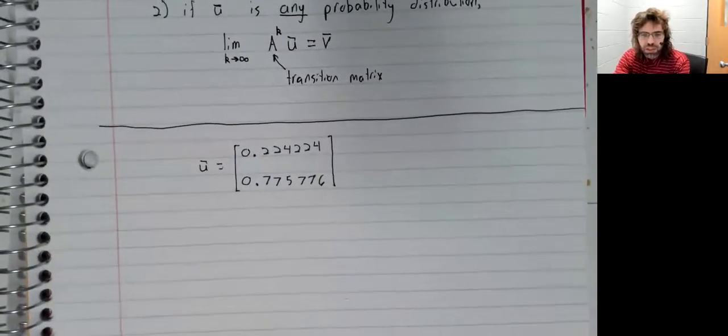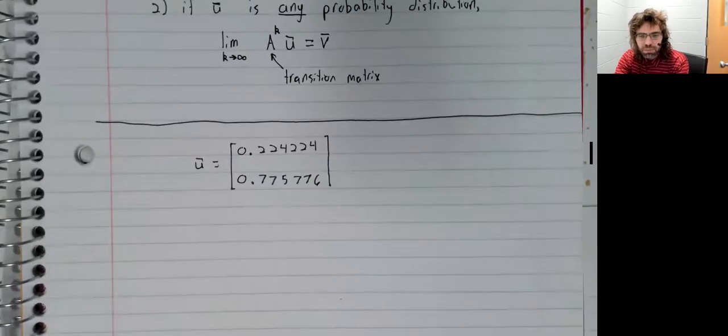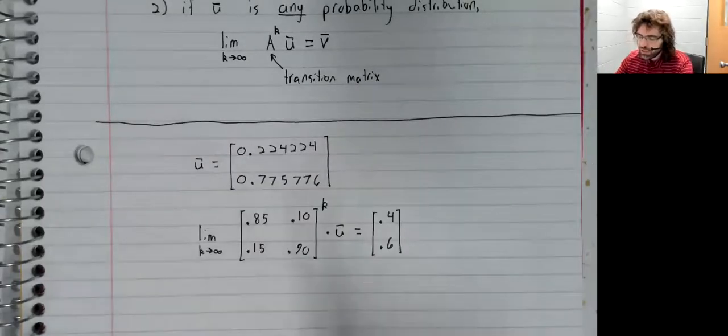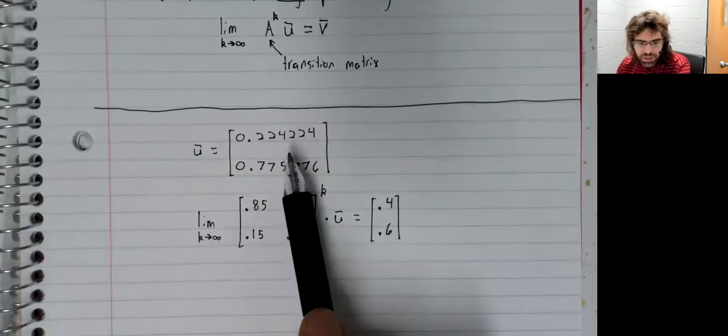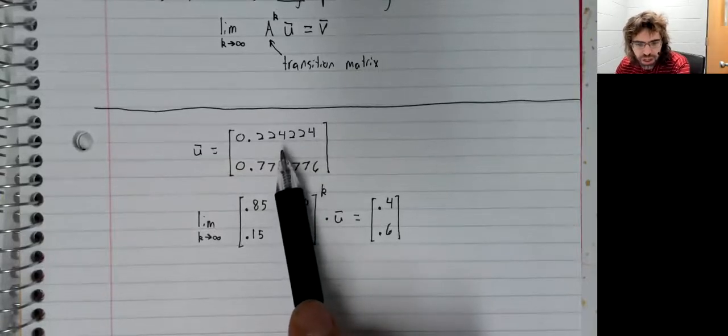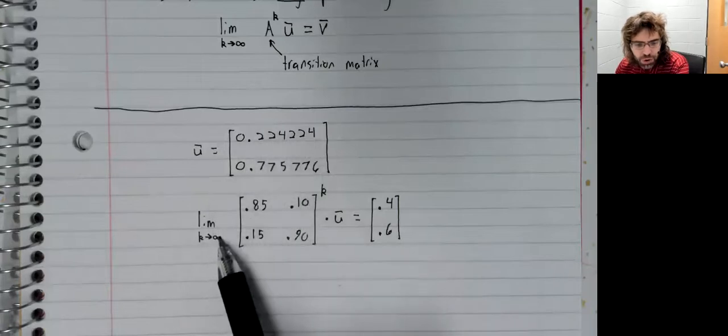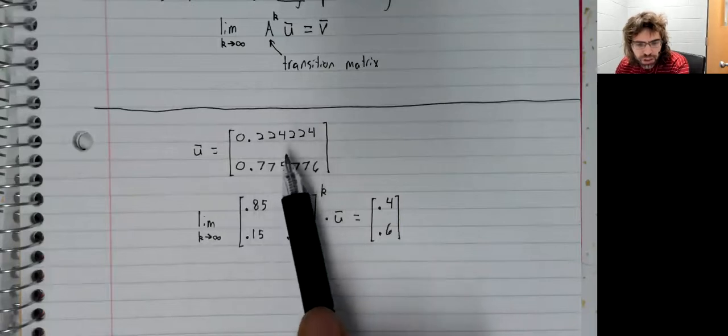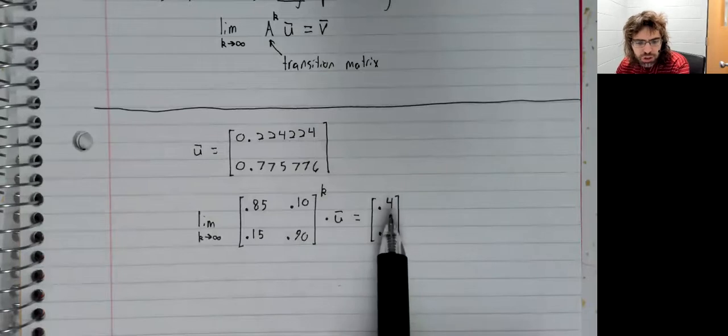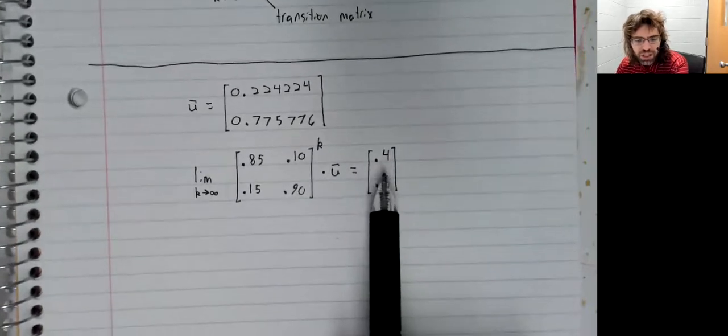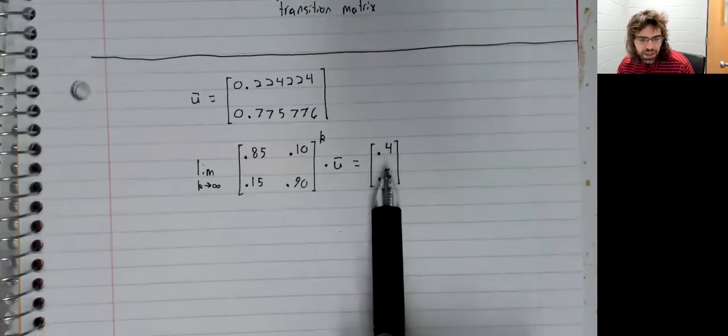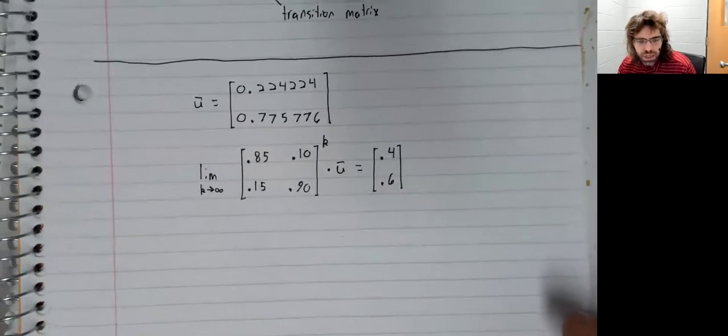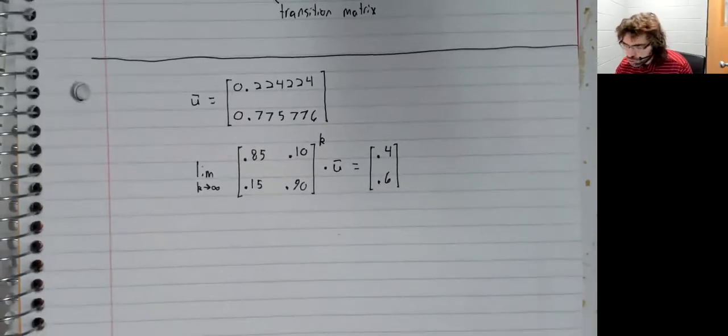But my claim is that if I take this initial probability distribution and start transitioning over and over and over, then my initial probability distribution is going to turn into this with time. And that is true.